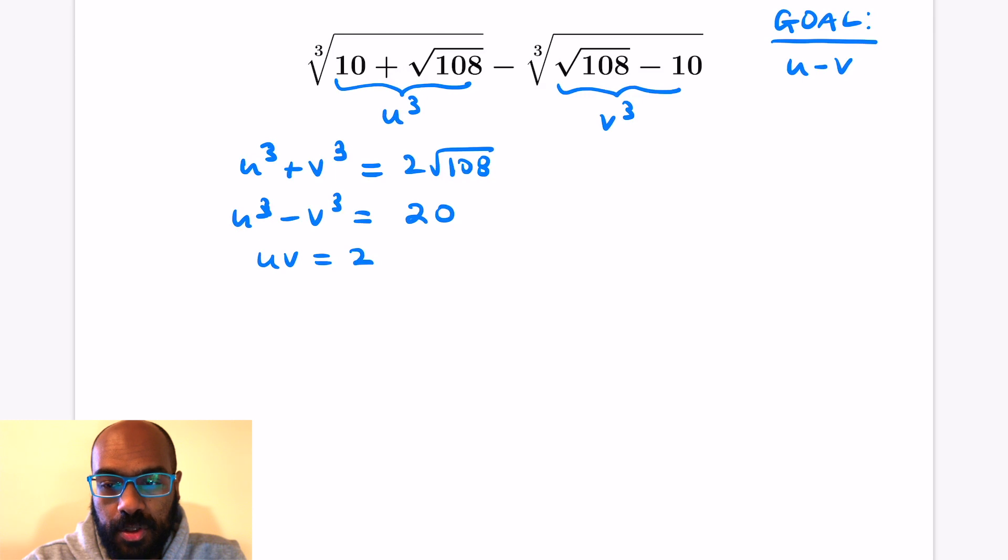Now the goal is to figure out again what u minus v is and we have some expressions involving u and v. One thing we could do is write u in terms of v or v in terms of u and then make a substitution in any one of the two expressions we have involving u cubed and v cubed above. We'll use the second one. So u cubed minus v cubed is 20, and so then that tells us that u cubed minus 2 over u all cubed is 20.